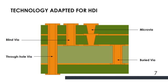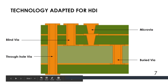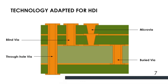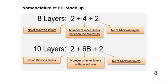What are the technologies adopted for HDI? We use blind vias, micro vias, and buried vias — as shown in the picture: through-hole, blind, micro via, and the stacked one. How do we nomenclature these HDI stack-ups? Suppose it is an 8-layer board — if I write 2+4+2, the 2 on either side represents the number of micro vias. Normally, these micro vias are symmetric in the stack-up: 2 on the top and 2 on the bottom. It is a sign of a good design — it should be symmetric.